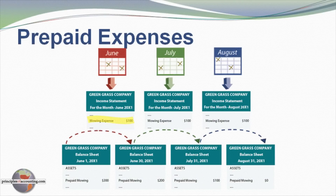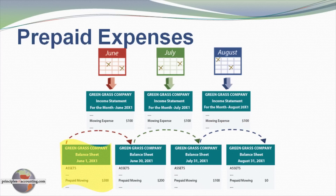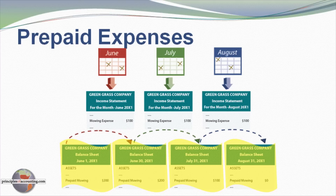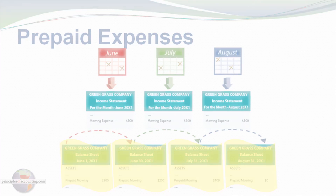In June, mowing expense of $100 appears on June's income statement. July's income statement would also include $100 of mowing expense, and August's income statement would include $100 of mowing expense. On the balance sheet on June 1st, we have $300 representing our prepaid service. At the end of June, $100 has been consumed and expensed, so the balance sheet reflects $200. At the end of July, only one month's service remains prepaid, so only $100 remains in the asset account. At the end of August, all service has been received and all cost transferred to expense — the balance sheet shows zero for prepaid mowing.